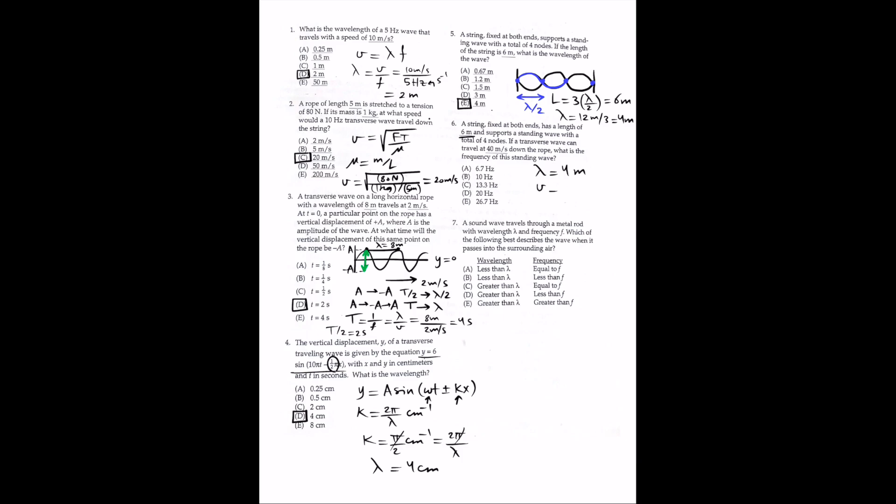For question 6: same setup — a string fixed at both ends, length 6 m, supporting a standing wave with 4 nodes. A transverse wave can travel at 40 m/s down the rope. What is the frequency? From the previous question, λ = 4 m. So frequency = V/λ = 40 m/s ÷ 4 m = 10 Hz. The answer is B.